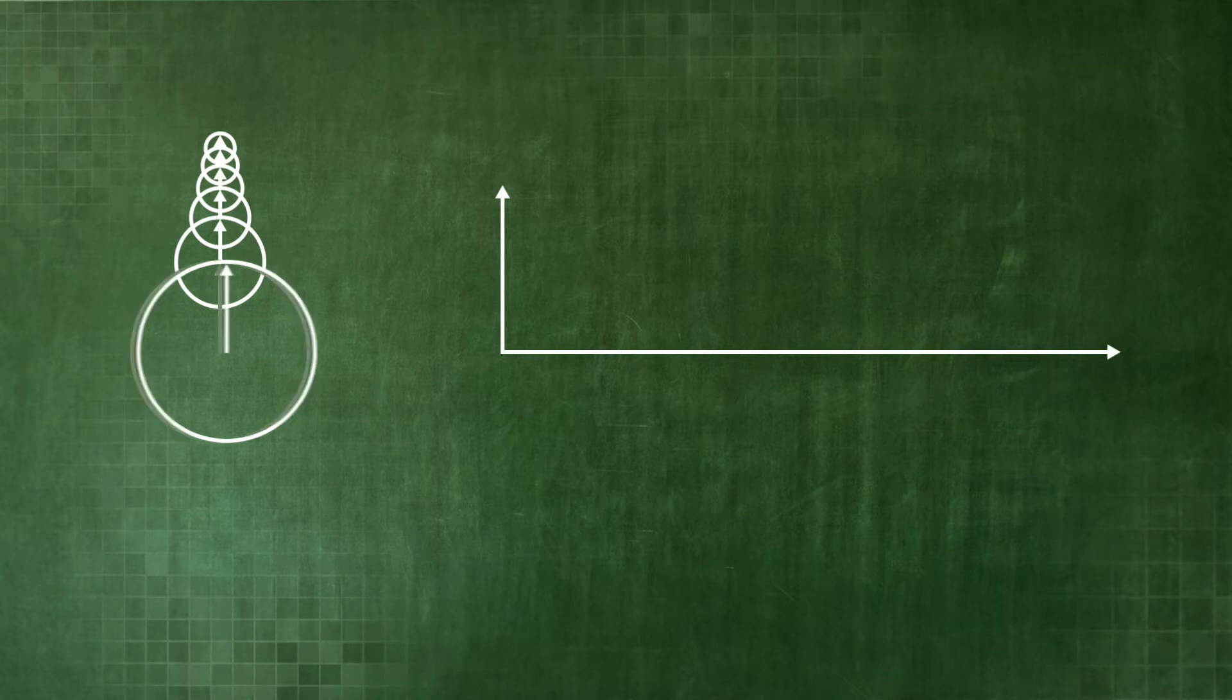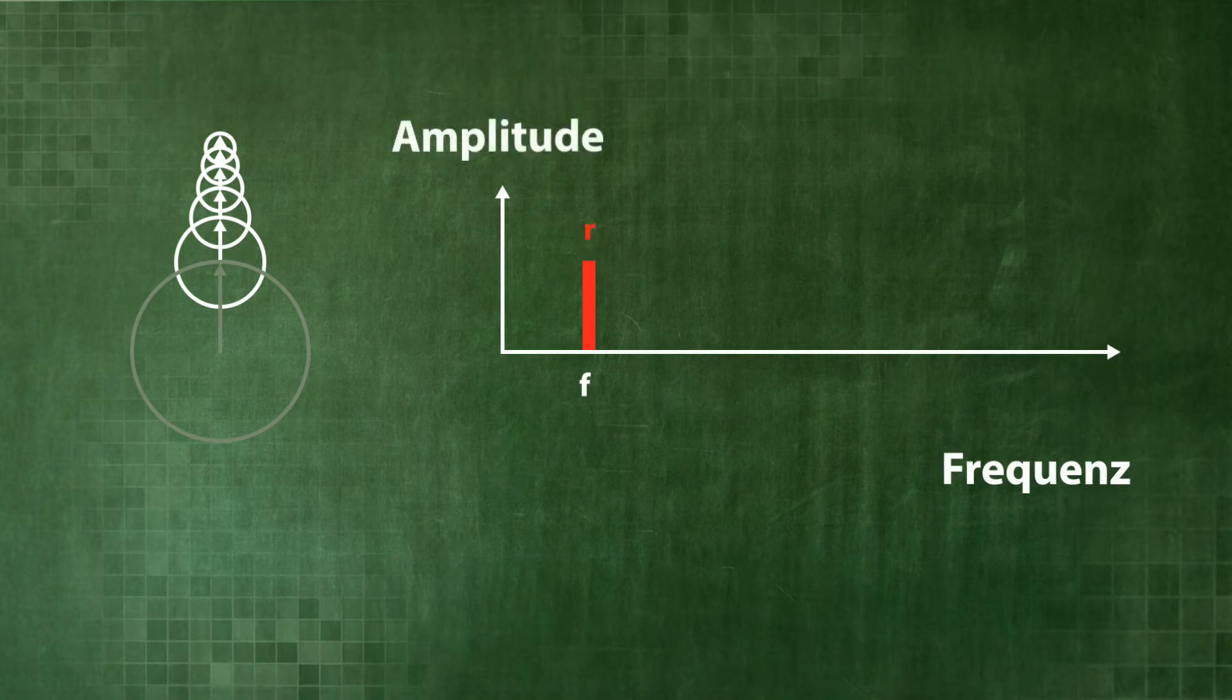Let us consider the specific spinning wheels with their rotation frequencies. Let us start with the fundamental tone having the frequency f and the amplitude r, that is, with the radius of this wheel.